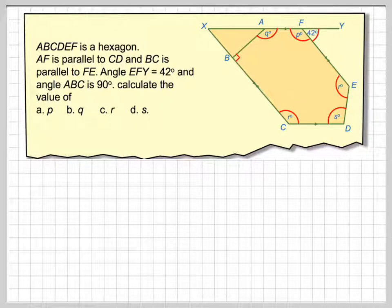AF is parallel to CD and BC is parallel to FE. And angle ABC is 90 degrees.